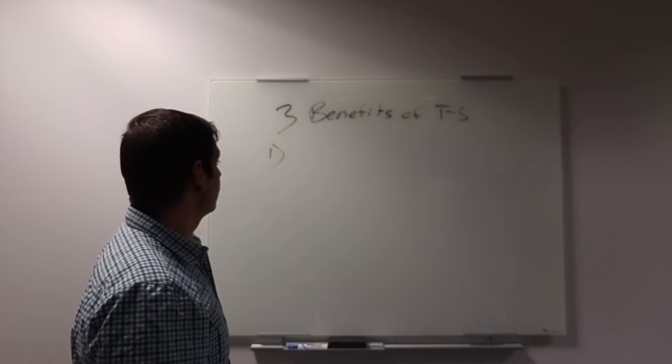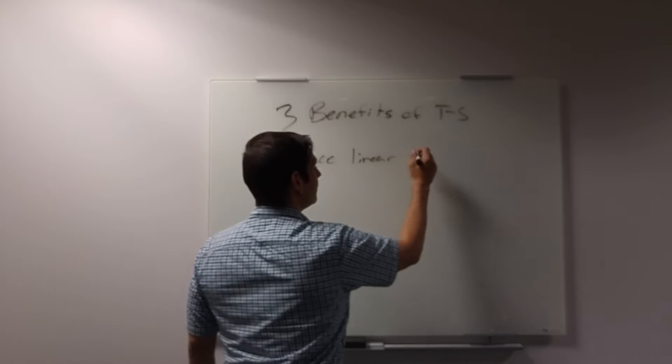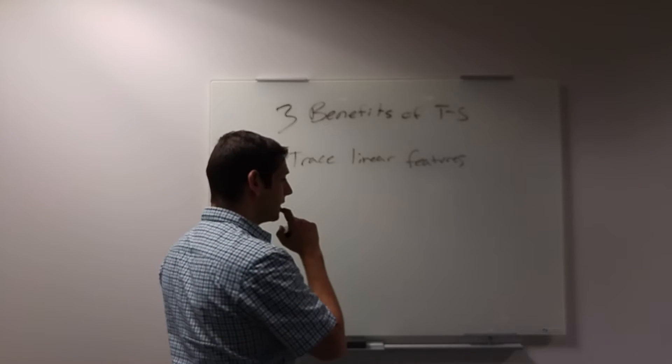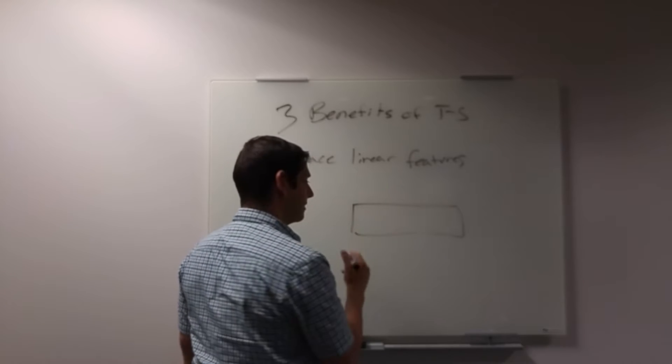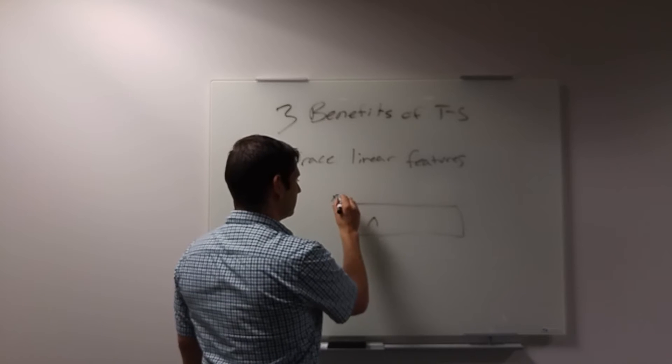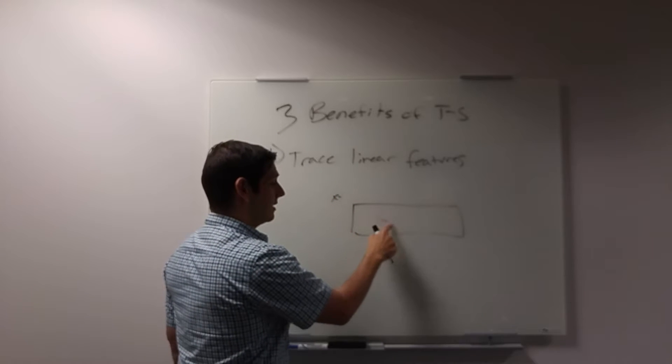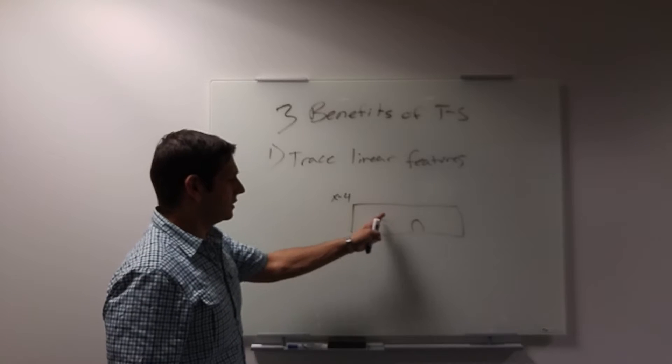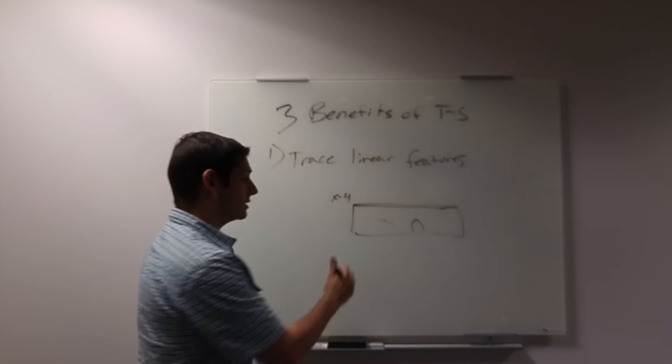Let's begin. Number one, a benefit of time slices is that you can trace linear features. For example, if you're looking at it in a profile view, x equals one, maybe you see that problem over there, x equals two, maybe you see it here, x equals three, you see it over here, and then maybe x equals four, you see something over here. Is that part of the same group? It's hard to tell sometimes in a profile. This is your ground surface. It's hard to tell.